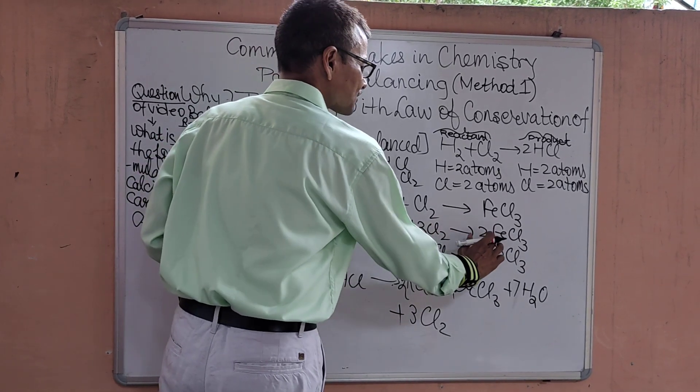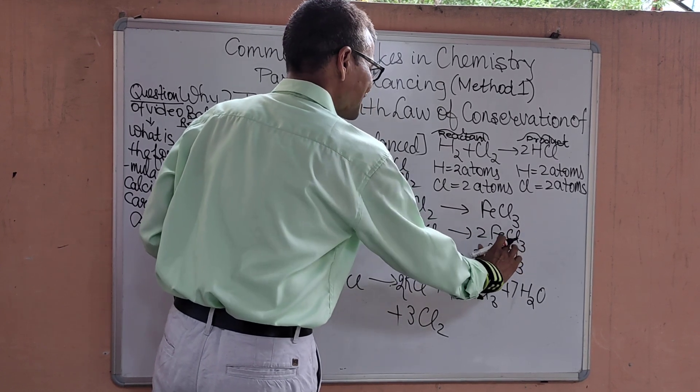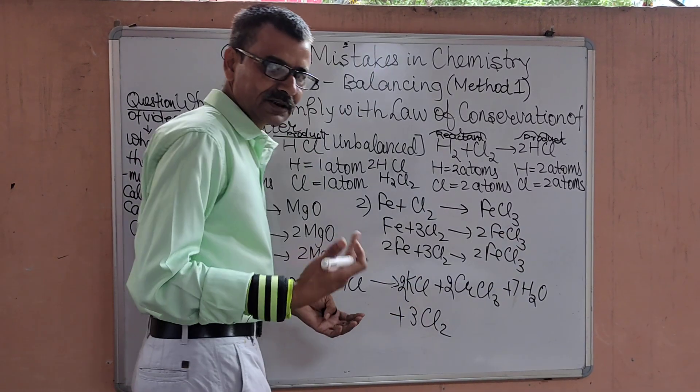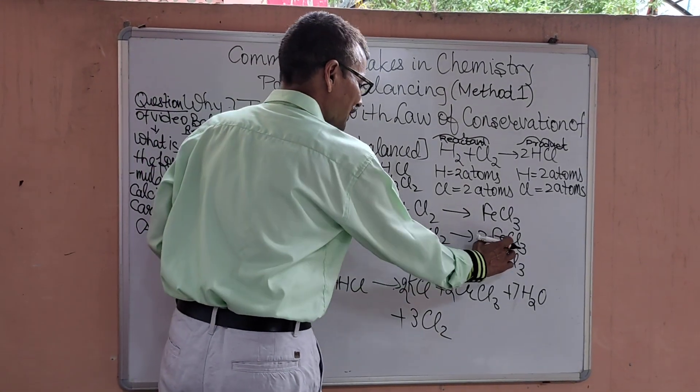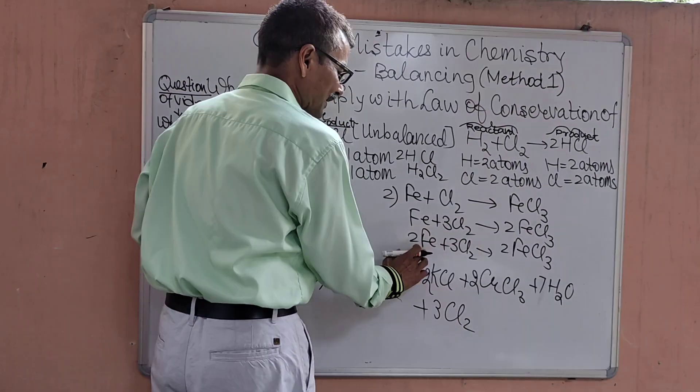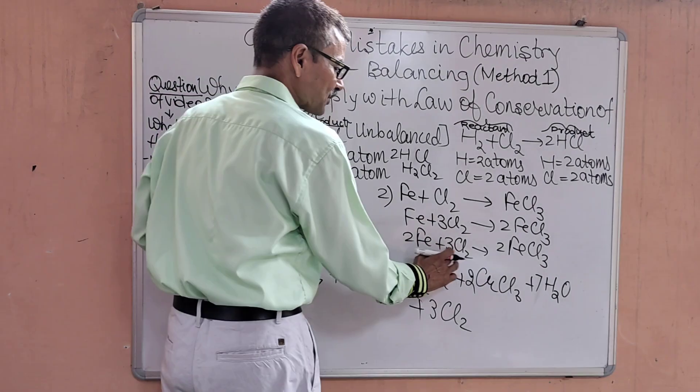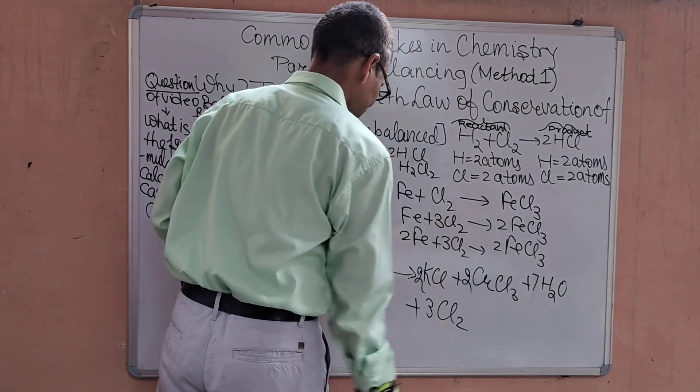So we get 3×2=6, 2×3=6, 6 chlorine atoms balanced. But the iron which has become unbalanced in our method of balancing, 2 iron here. So we multiply this iron by 2 and we have got the balanced equation: 2 Fe plus 3 Cl2 giving you 2 FeCl3.